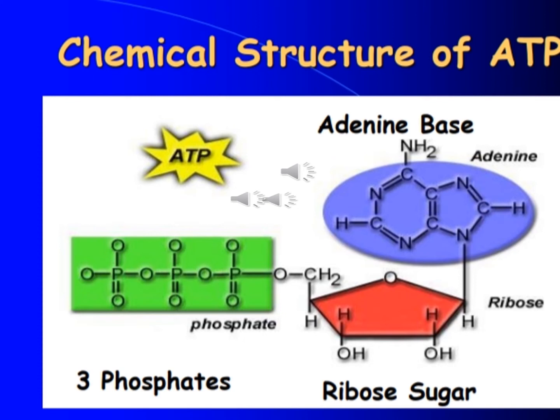The base and sugar together are collectively called adenosine, and the three phosphates are called triphosphate — so A stands for adenosine and the three phosphates form triphosphate. If there are two phosphates present, we call it ADP — Adenosine Diphosphate. If only one phosphate is present, it is called AMP — Adenosine Monophosphate.